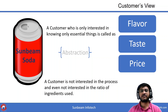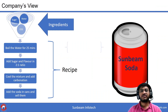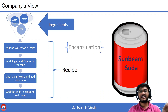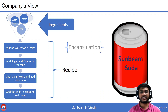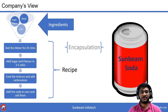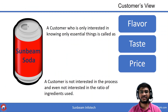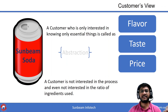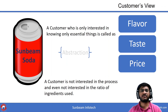Let us have a quick revision. What is encapsulation? Encapsulation is binding the data and code together — binding the ingredients and recipe together. And knowing only the essential things, like the flavor, taste, and price, this is what we call abstraction.